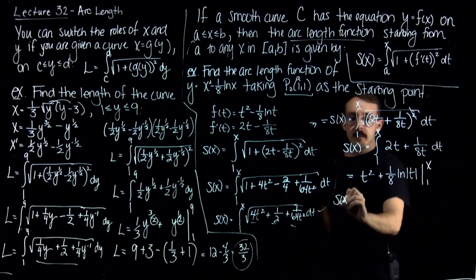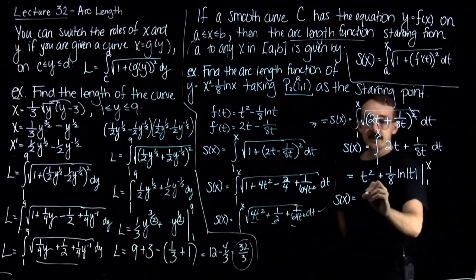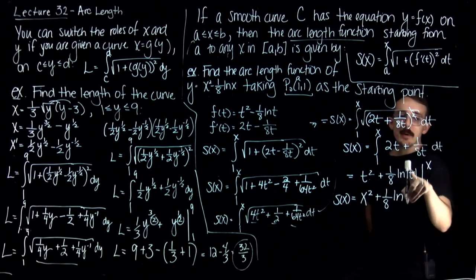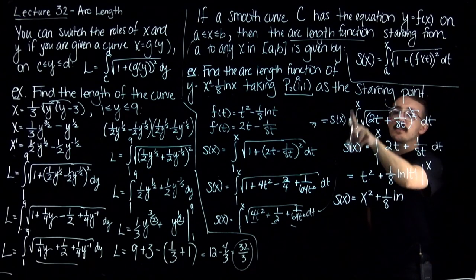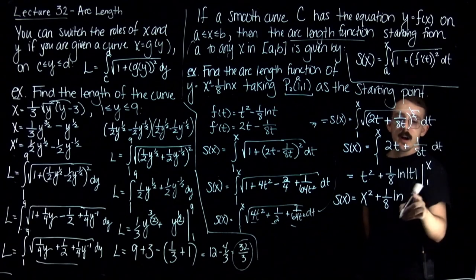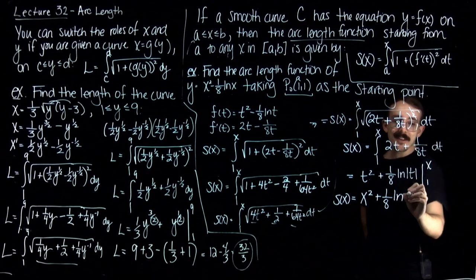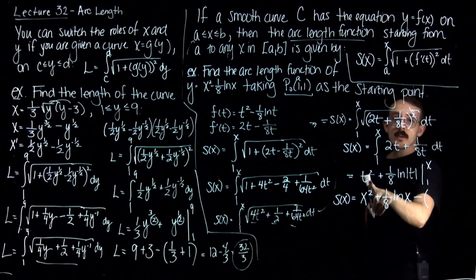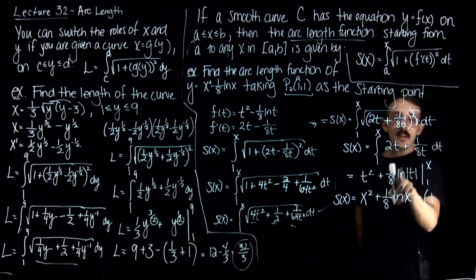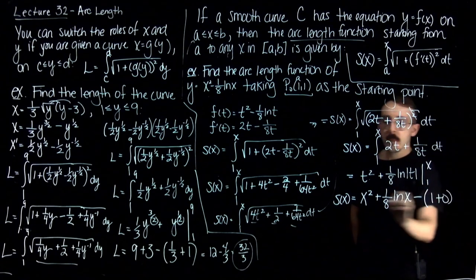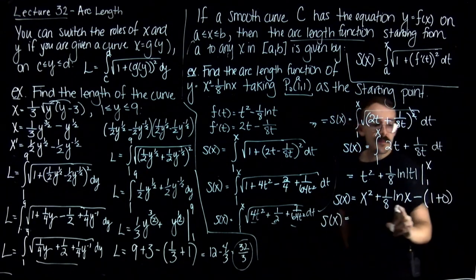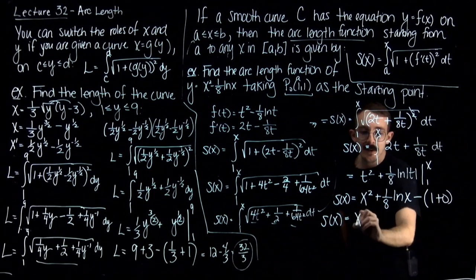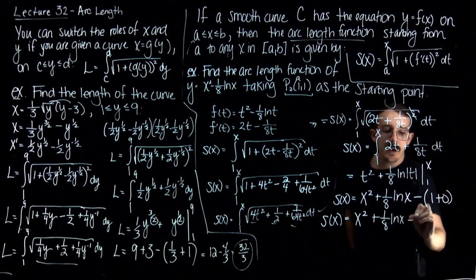The arc length function is: plug in x to get x squared plus 1/8 ln of x — I can drop the absolute value bars since x is greater than or equal to 1 — minus plugging in 1, which gives 1 squared equals 1 and ln of 1 equals 0. So the final arc length function is s of x equals x squared plus 1/8 ln of x minus 1.